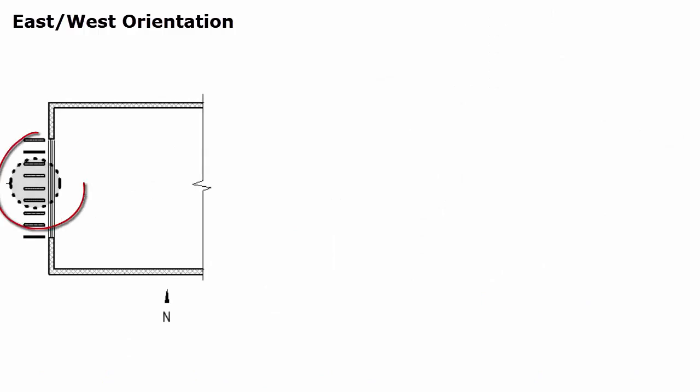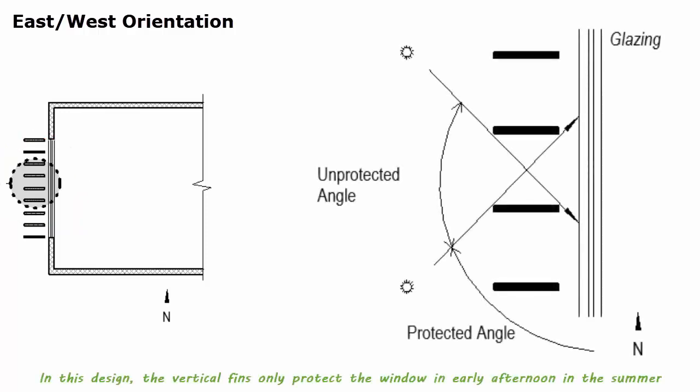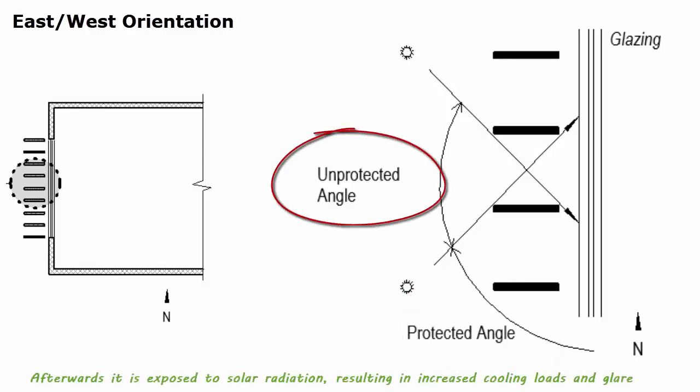Now let's use vertical fins as an example to discuss the challenges of shading west-facing windows. In this design, the vertical fins only protect the window in early afternoon in the summer. Afterwards, the window is exposed to solar radiation, resulting in increased cooling loads and glare.